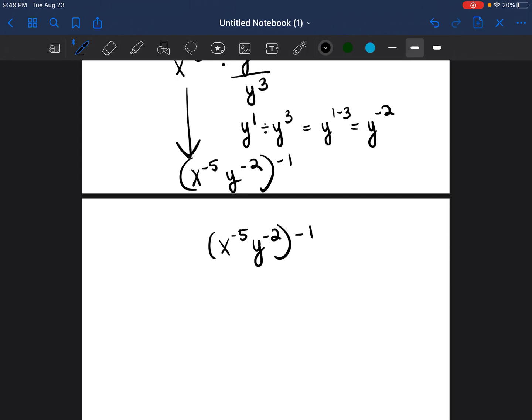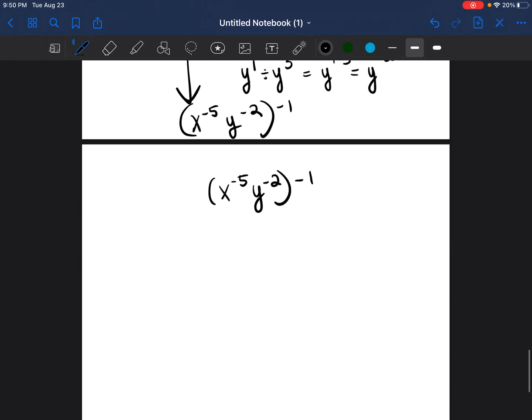Anytime you have an exponent raised to another power on the outside, you just multiply those two powers. So for example, you take x to the negative five times negative one. Negative five times negative one is five, so it would be x to the fifth power.